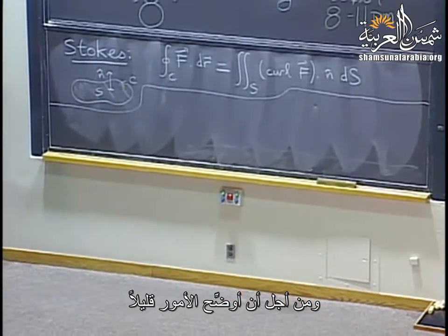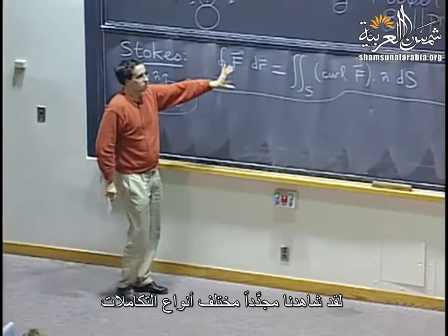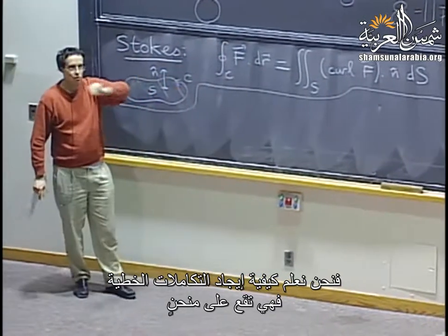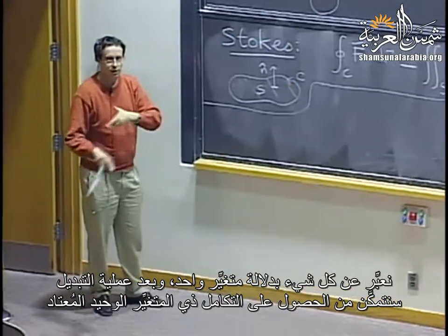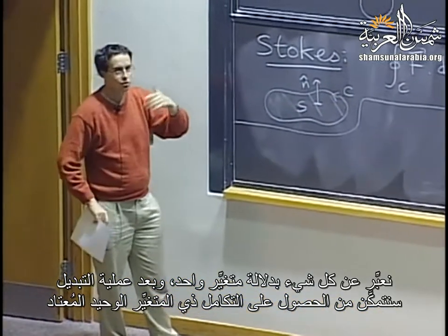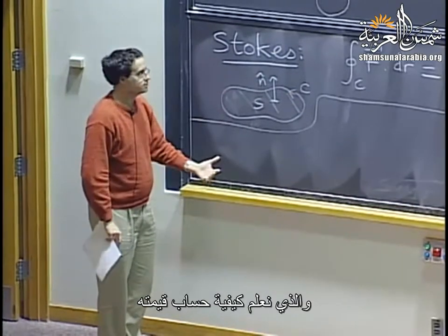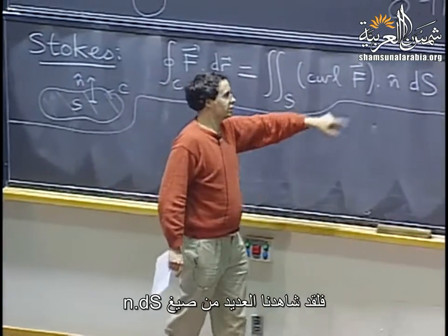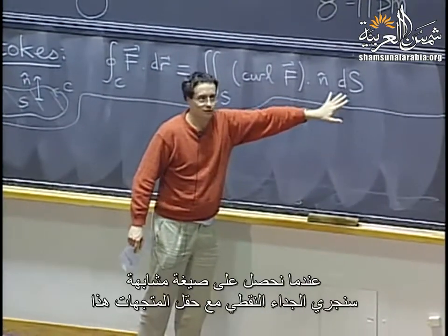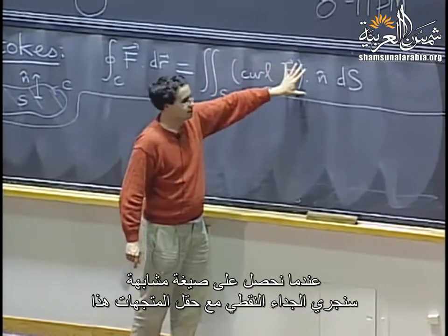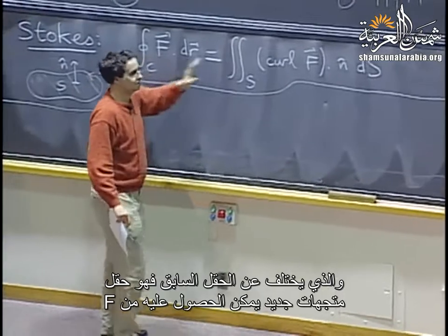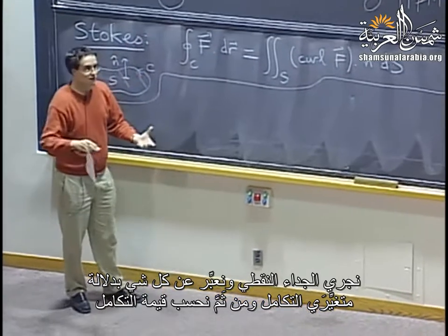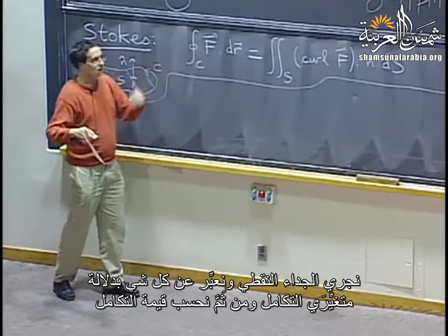To clarify: we've seen various kinds of integrals. Line integrals take place on a curve — you express everything in terms of one variable and end up with a usual one-variable integral. Surface integrals: we've seen formulas for N dS. Once you have such a formula, you do the dot product with the vector field curl F, express everything in terms of your two integration variables, and evaluate.